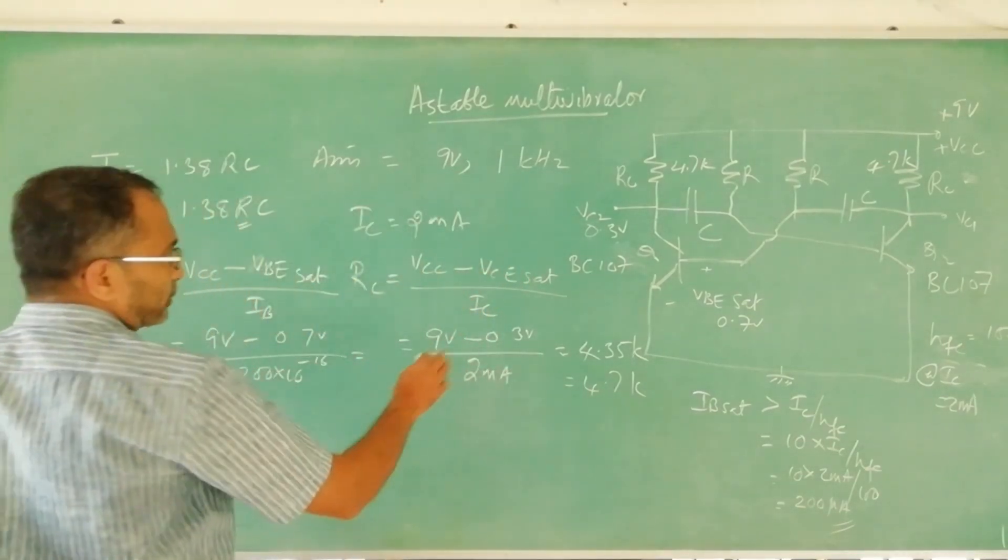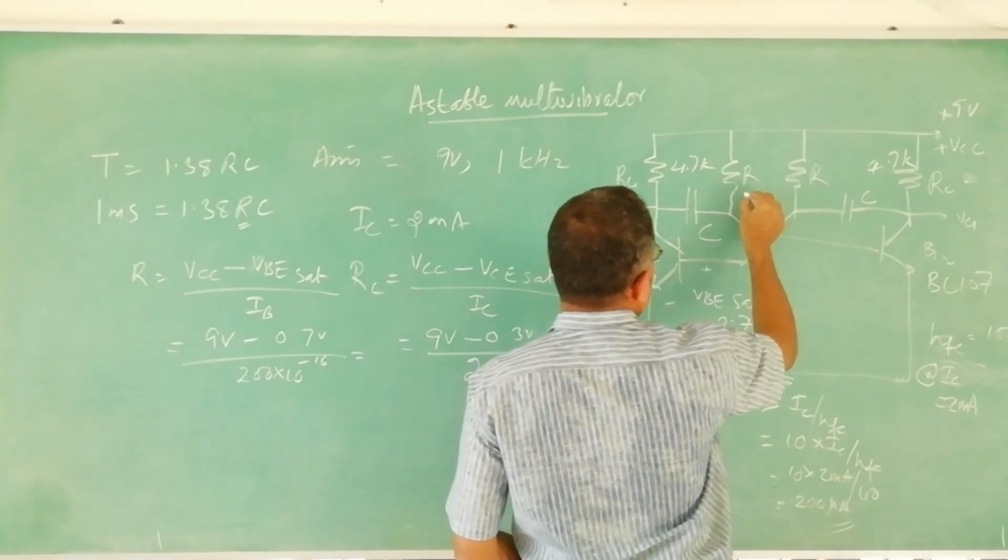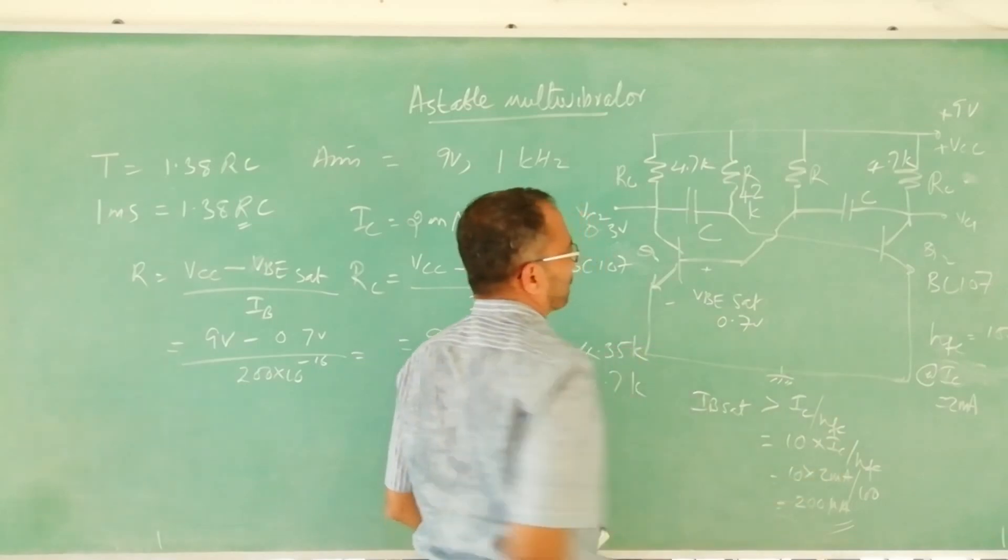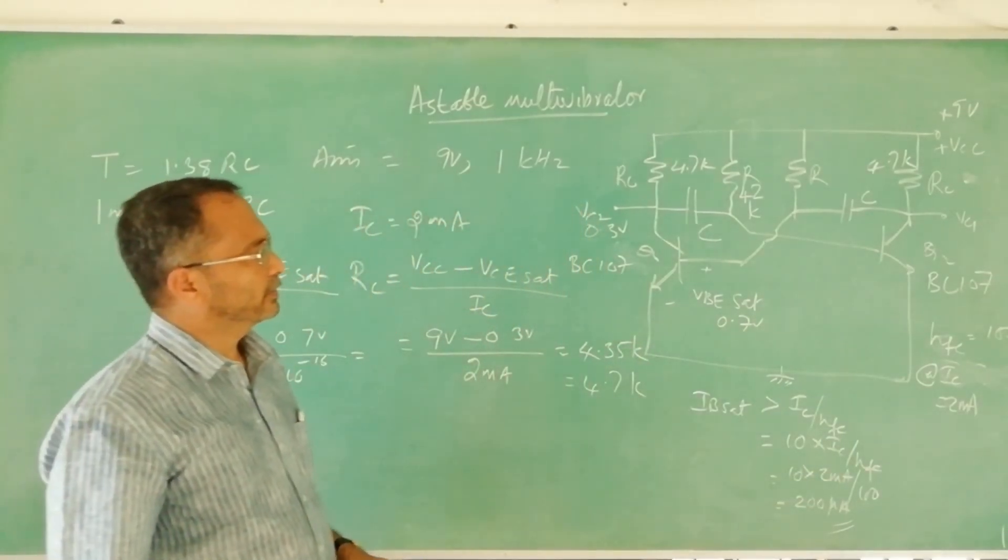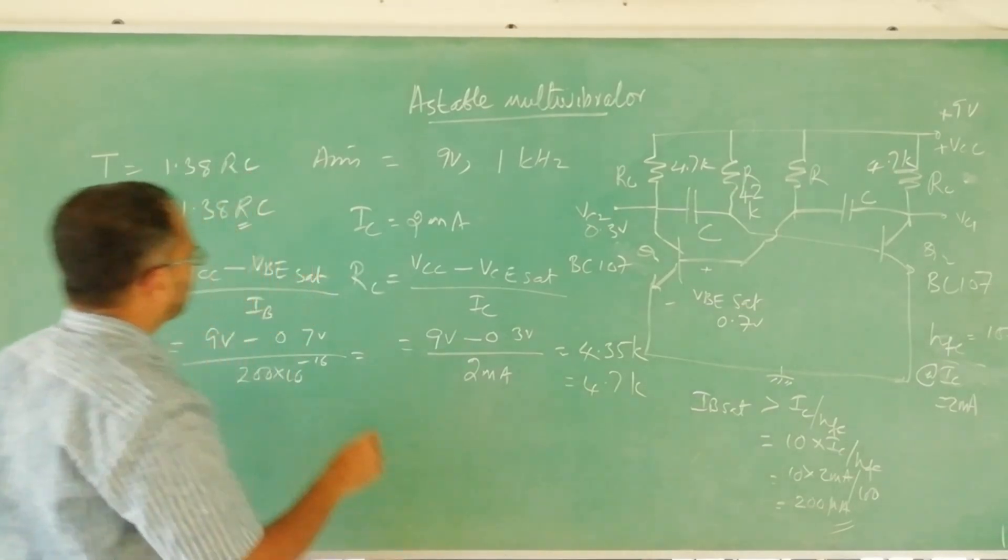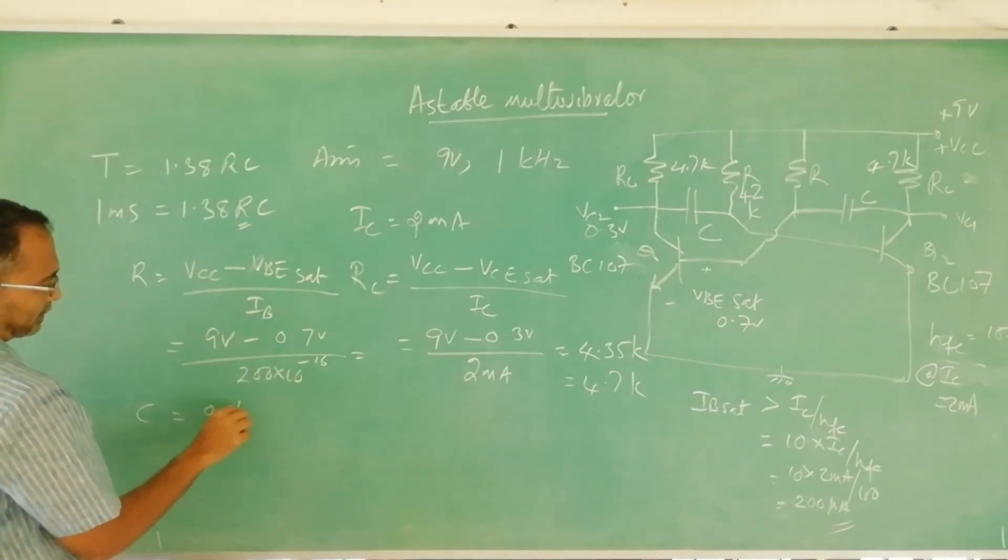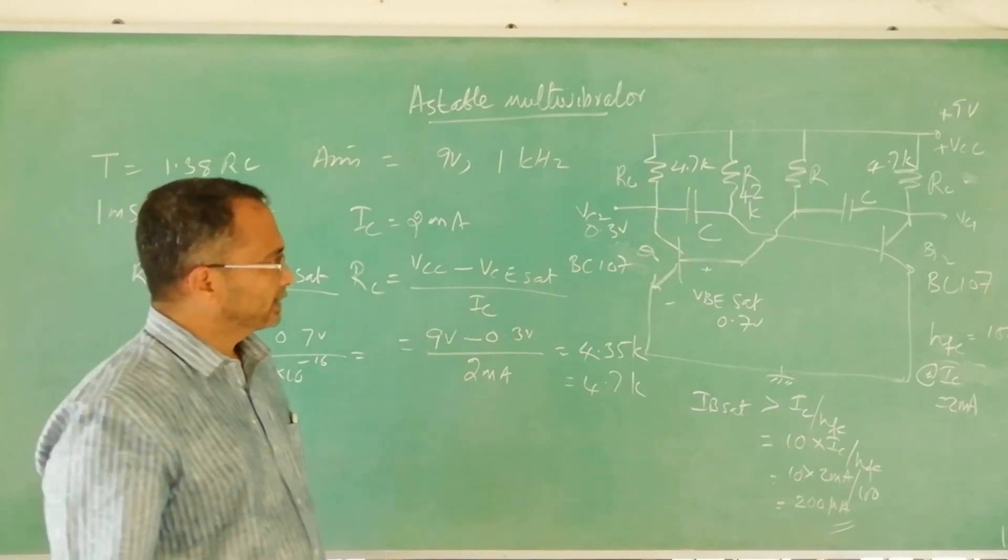If you calculate you will find it about 42k or 47k. Standard value we select 42k. After that we will put that value in this equation so we will find C. Substituting the value of R in this equation we will find C. C will be about 0.1 microfarad.